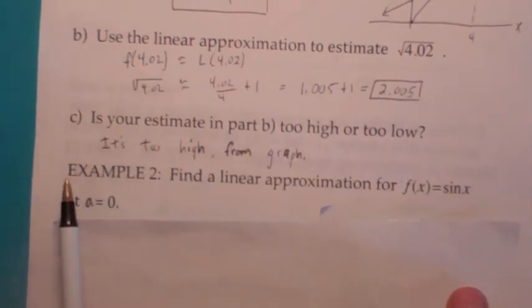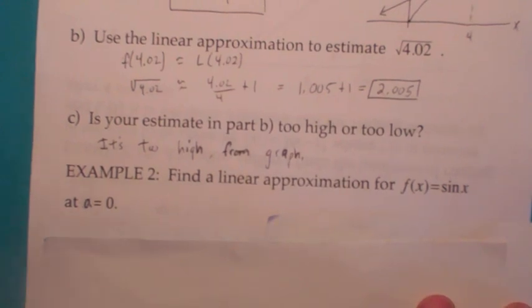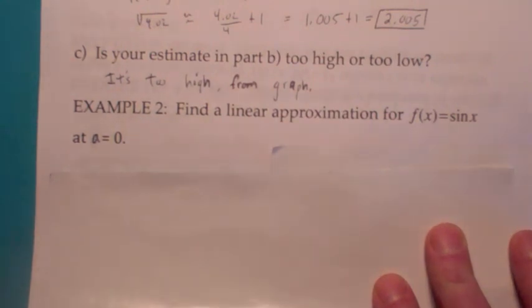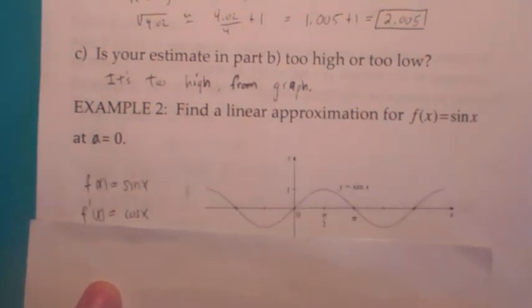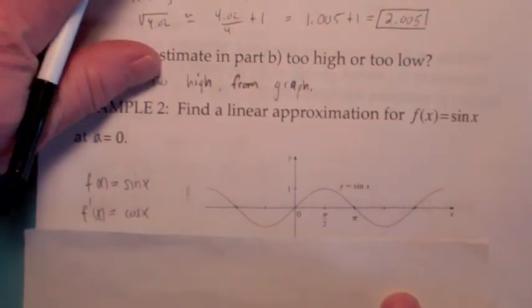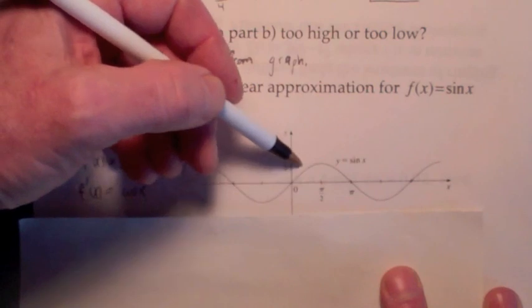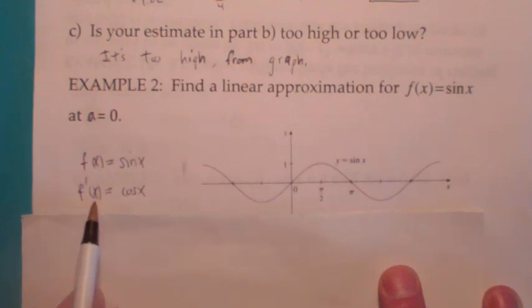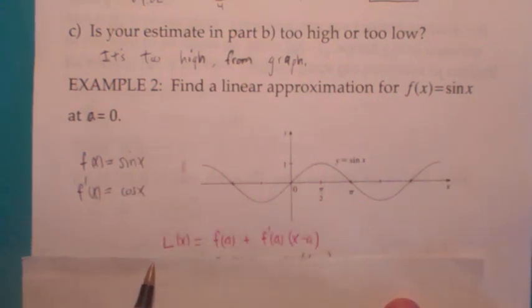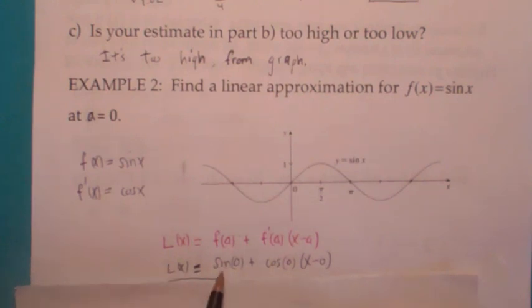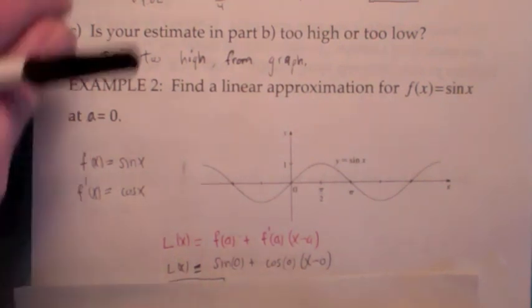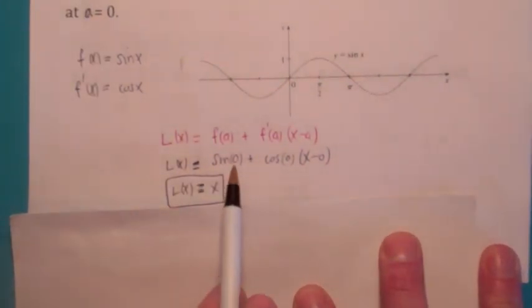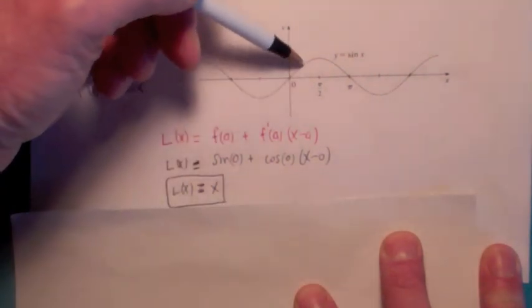This next one is very important in physics: the linear approximation for the sine function near a equals 0. If you look at the graph, what is the equation of the tangent line to the sine function near x equals 0? The derivative of sine x is cosine of x. Plugging into the linear approximation function: L of x equals sine of 0 plus cosine of 0 times x minus 0. That turns out to be L of x equals x, because sine of 0 is 0.